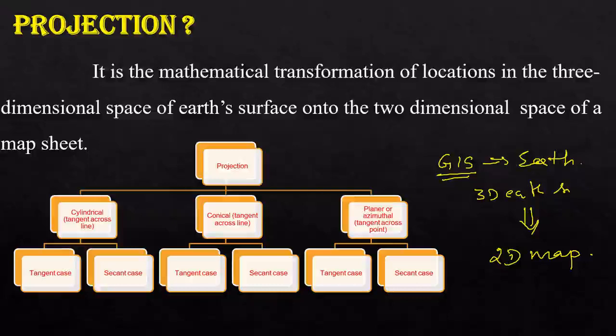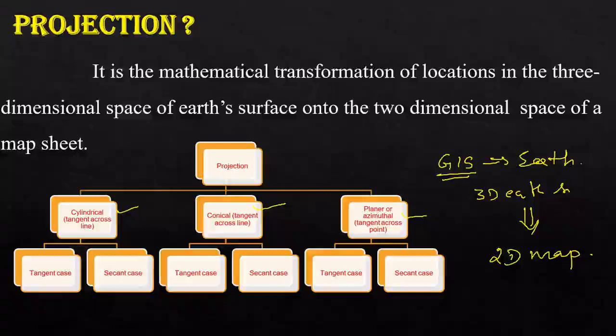How can we transform or project this 3D earth into a 2D map? Your projection can be cylindrical, conical, or planar (azimuthal). In order to perform cylindrical projection, you go for a tangent across a line. For conical projection, also along a cone, the tangent across a line; and for planar or azimuthal projection, the tangent across a point.